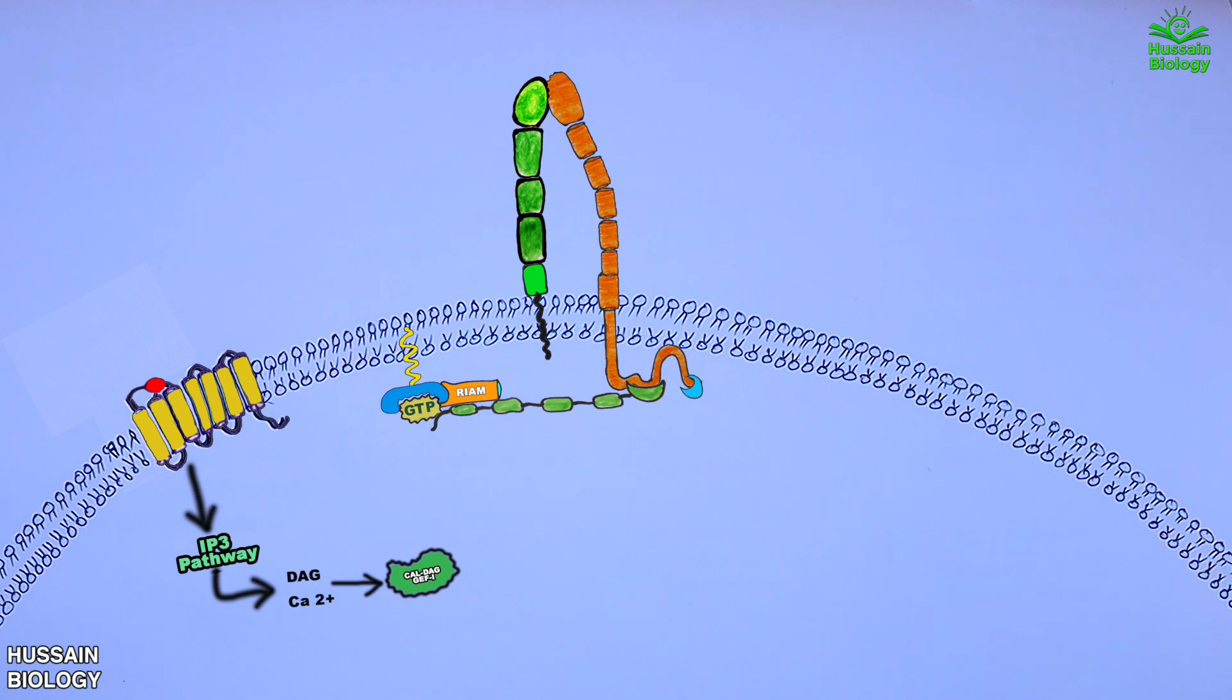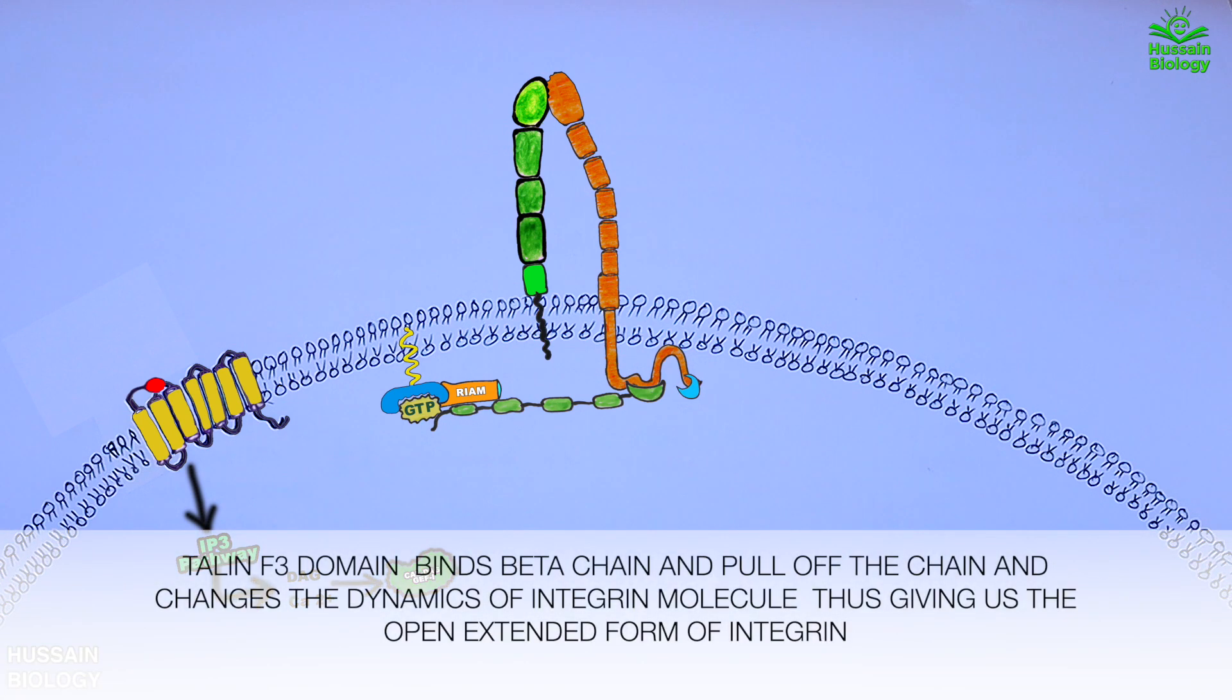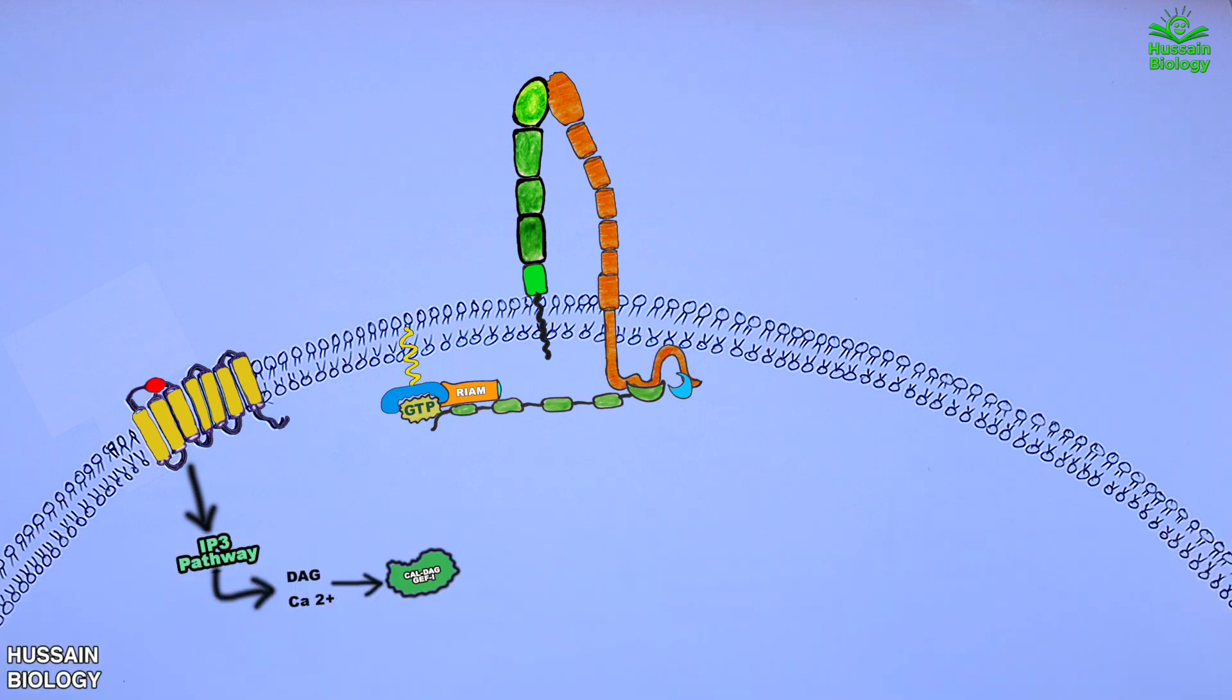To get into the details, it's actually the talin F3 domain that binds with the beta chain of integrin. The F3 domain engages with the membrane distal part of beta integrin tail and also maintains its membrane distal interaction to change the conformation of integrin molecule.